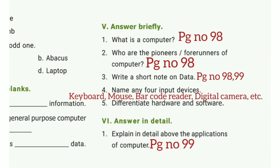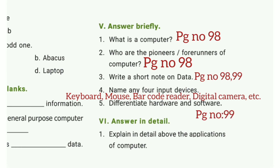Answer in detail. First one: Explain in detail about the applications of computer. The computer is used in sector shops for billing purposes. It is used in the railway station for issuing tickets. It is used in banks for multipurpose work. It is used in ATMs and in the post office.